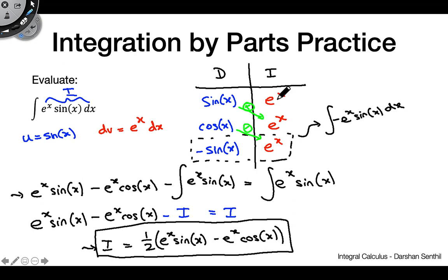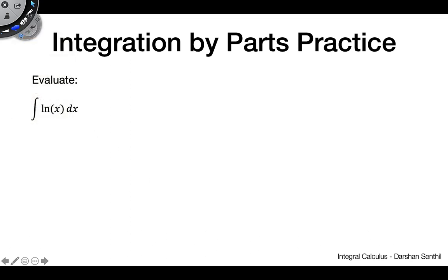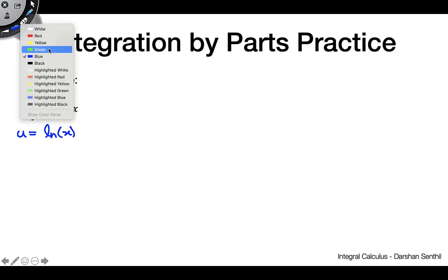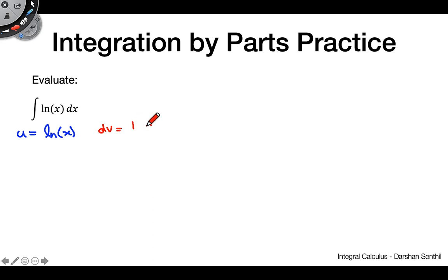The last two examples were pretty challenging, so we're ending with something light: the integral of ln(x) dx. I promise it's not an ugly integral — it actually works out really nicely and is a fun derivation. Since you've worked so hard, I'll just give you u and dv: u equals ln(x), and dv equals 1 dx.